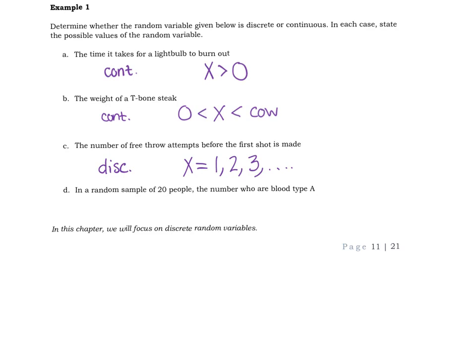And then D. In a random sample of 20 people, the number who are blood type A. So again, this is discrete. It is countable. And out of those 20 people, how many could have blood type A? Well, yes. One, two, three, et cetera. But don't forget, you could have nobody with a blood type A. So zero, one, two, et cetera. And the most you could have with type A blood would be all 20 of them. And so in this case, there is an upper limit.